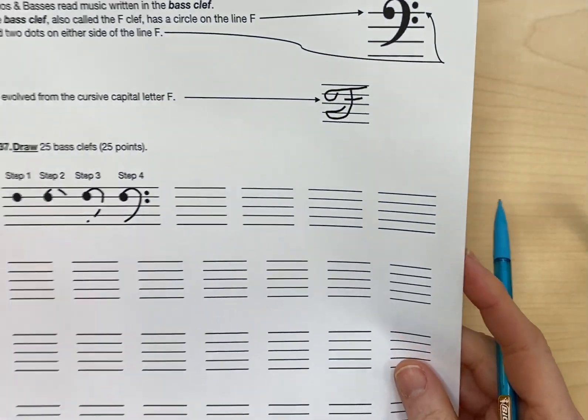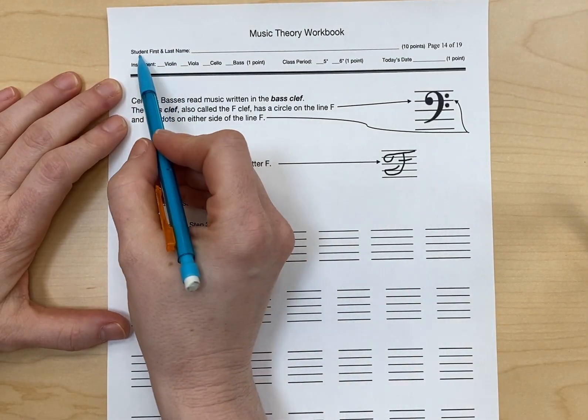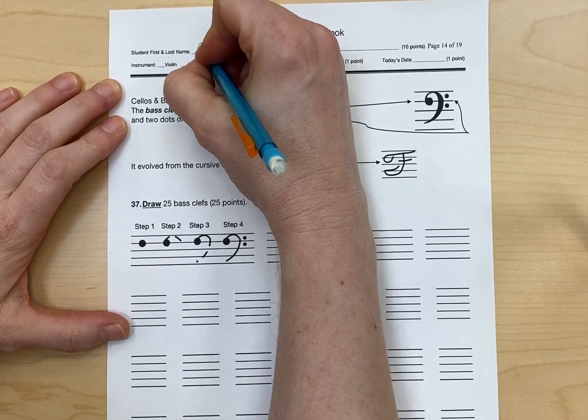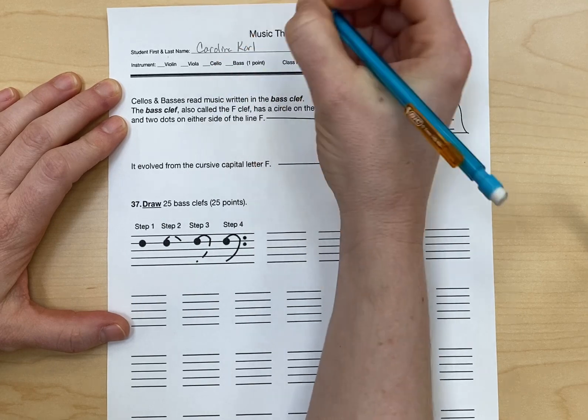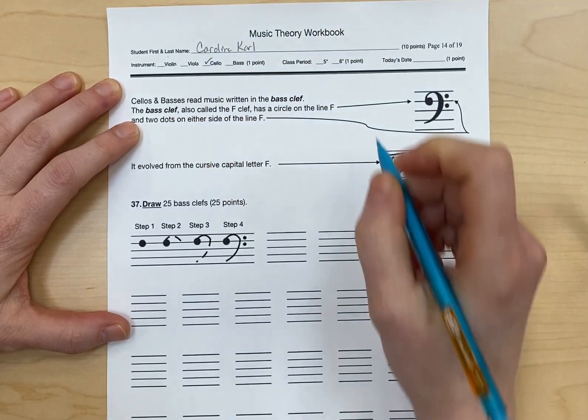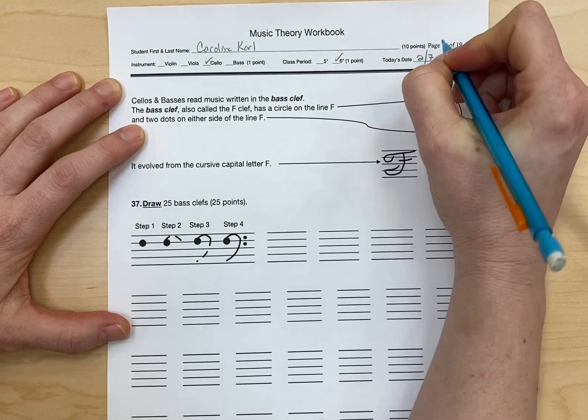So we're going to go to our theory paper, and we're going to do the first thing we always do, which is our first and last name. Check your instrument, check your class period, and put today's date.